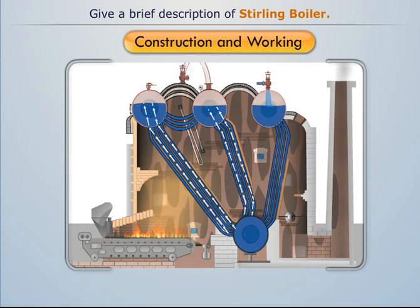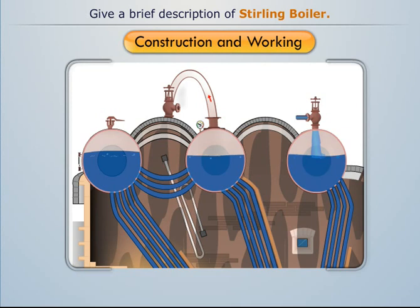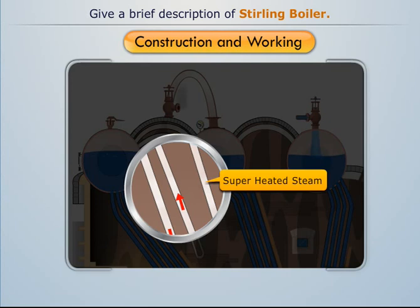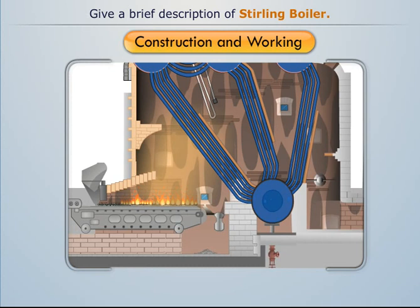The steam moves upwards and gets collected over the water level in the steam drums. Saturated steam is extracted from steam drum 2 and supplied to the superheater tubes. This converts the saturated steam into superheated steam, which can be taken out from the steam stop valve.